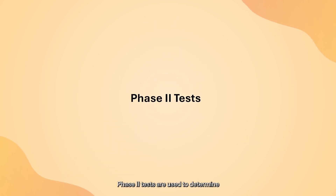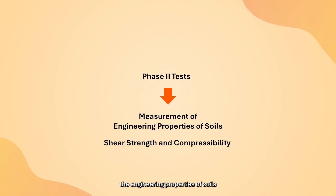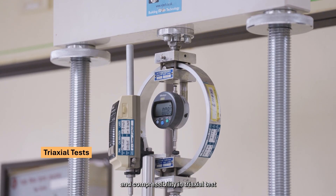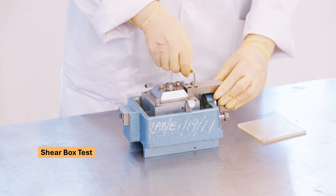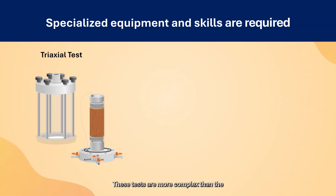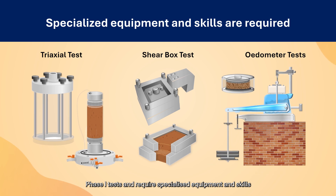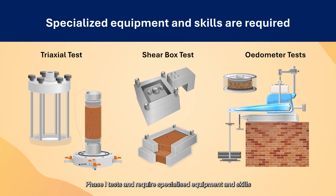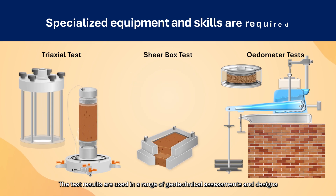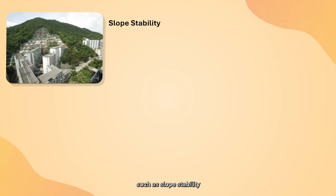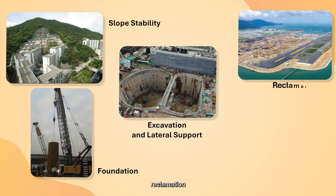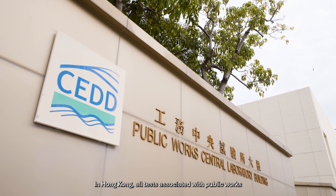Phase 2 tests are used to determine the engineering properties of soils, such as shear strength and compressibility in triaxial tests, shear box tests, and oedometer tests. These tests are more complex than Phase 1 tests and require specialized equipment and skills. The test results are used in a range of geotechnical assessments and designs, such as slope stability, foundation, excavation and lateral support, reclamation, and tunneling.